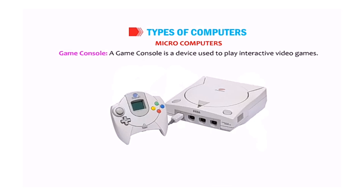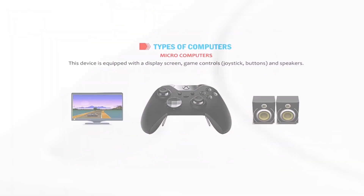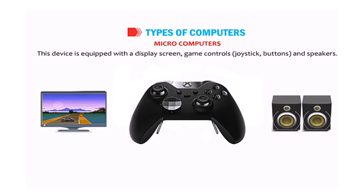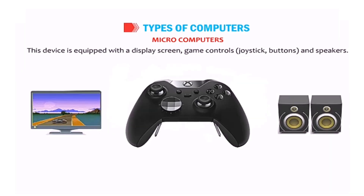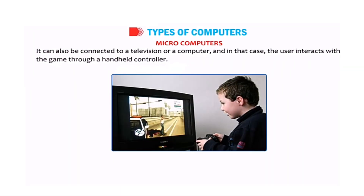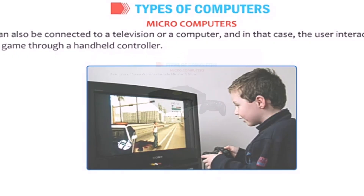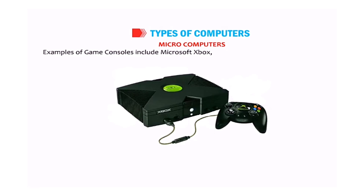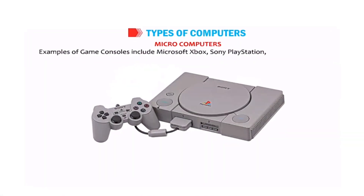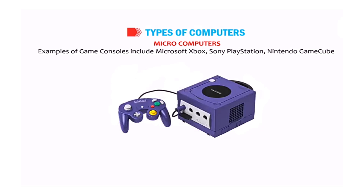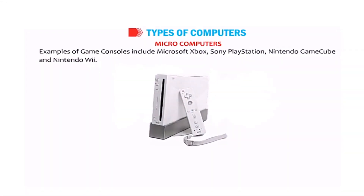A game console is a device used to play interactive video games. It comes with a display screen, game controls such as a joystick and buttons, and speakers. It can be connected to a television or computer, and in that case the user interacts with the game through a handheld controller. Examples of game consoles include Microsoft Xbox, Sony PlayStation, Nintendo GameCube, and Nintendo Wii.